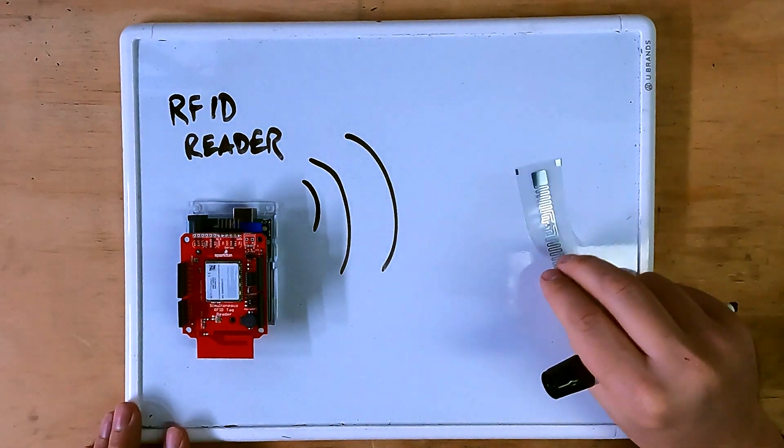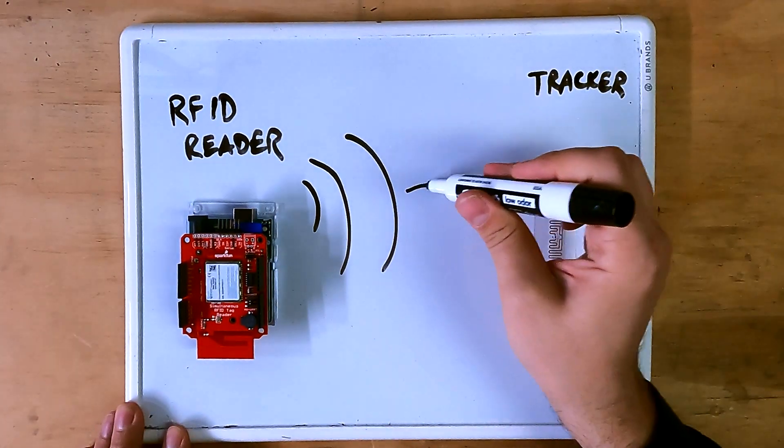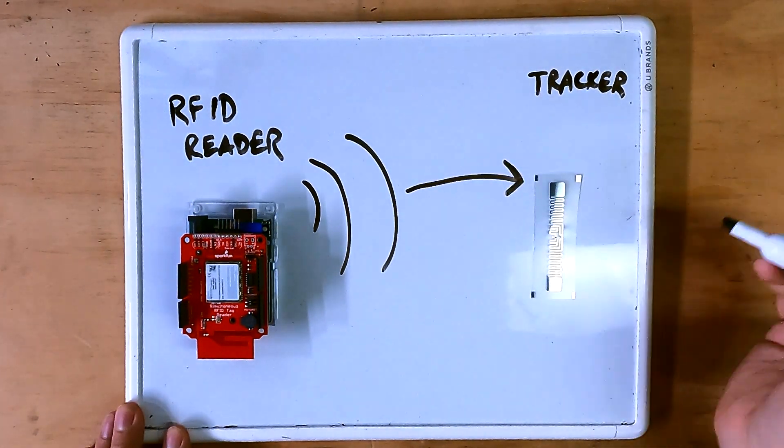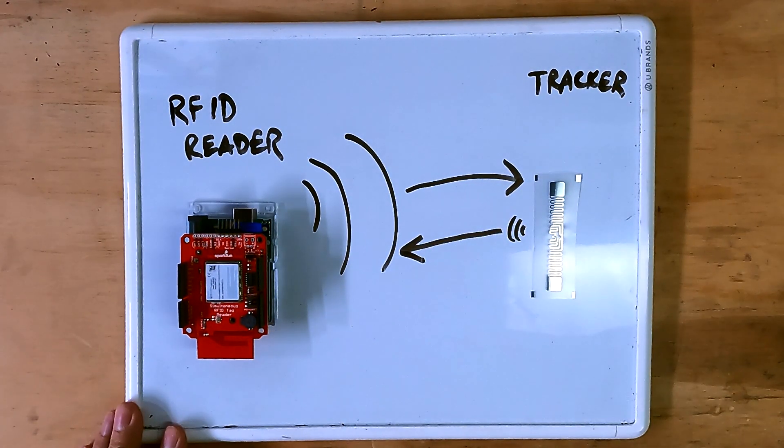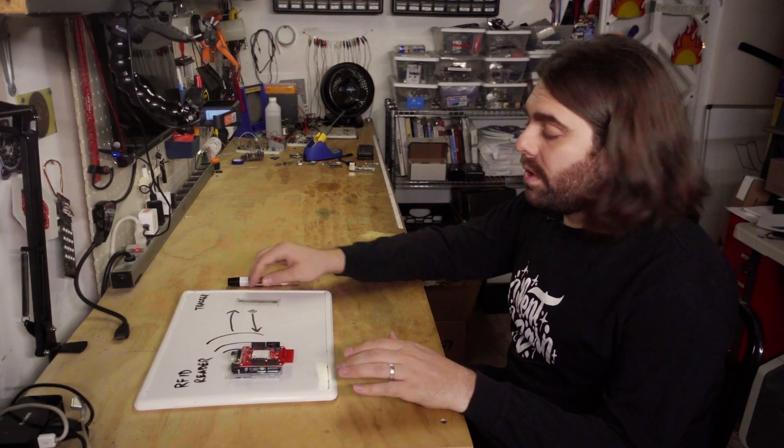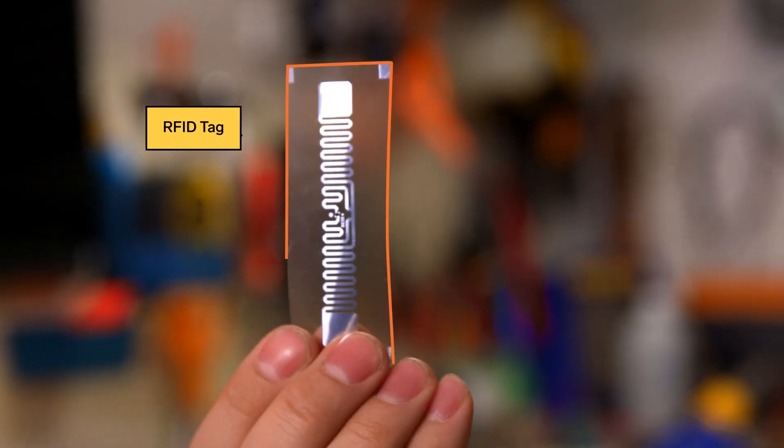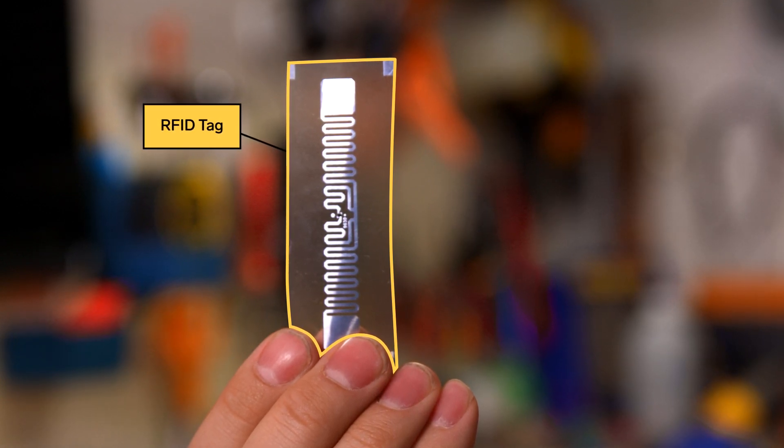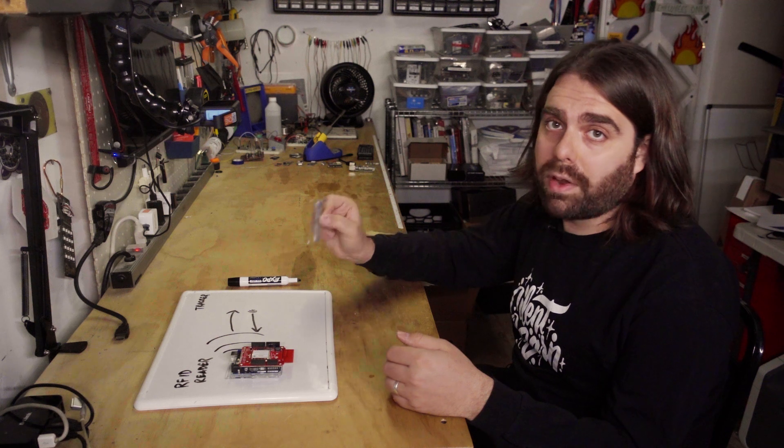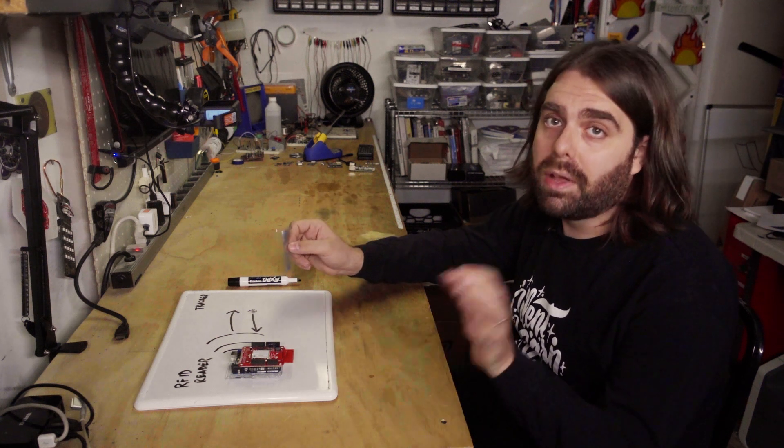The RFID reader will transmit on a certain wavelength. And when a tag is within range, it will receive a small amount of energy from that wavelength and transmit back. And if it's within the range of the RFID reader, it can trigger the sensor. This tracker isn't powered. This is just an antenna. And how it works is the RFID reader transmits radio waves that travel through the air and can magnetize and power this to send a small signal back to the reader. That's how we can identify where this tracker is.